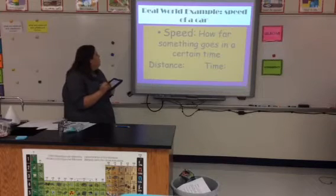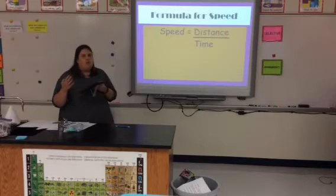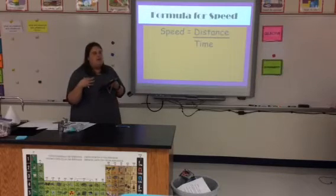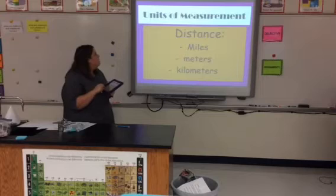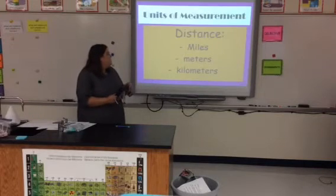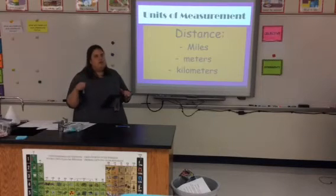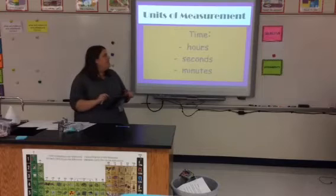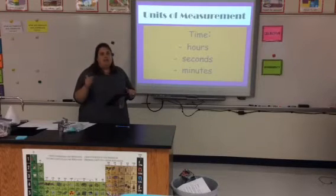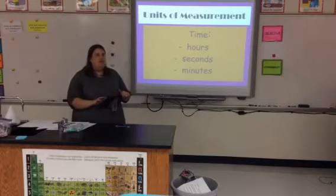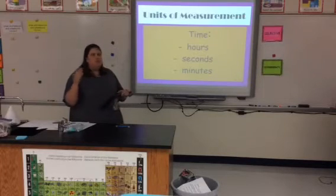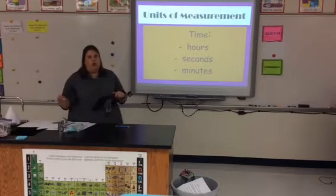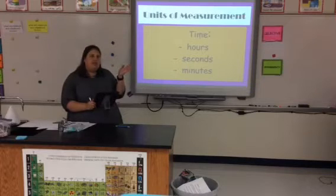From that, we get the formula: speed equals distance over time, or distance divided by time. In simpler form, S equals D over T. Distance can be measured in miles, meters, or kilometers. Time can be measured in hours, seconds, or minutes. Speed will be a combination of those — for example, meters per second, kilometers per hour, or miles per hour.